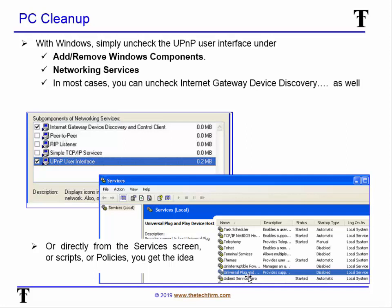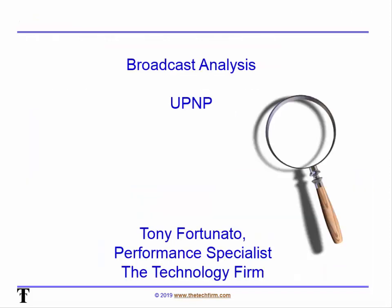Depending on your version of Windows, go to Services and turn off 'Universal Plug and Play' and/or 'SSDP' in those two places. Again, I would start a capture afterward to make sure the traffic goes away, because even if it's turned off on your system, other applications may still be sending UPnP out. Hope that helps — have a good day, bye for now.